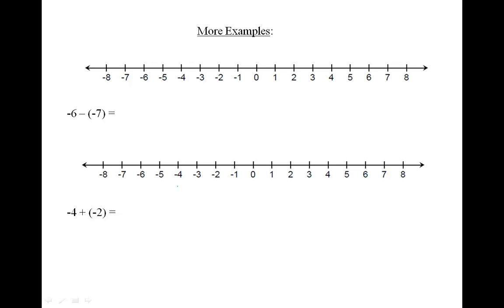Let's look at another example: minus six minus a minus seven. The rule is when you are adding or subtracting numbers, two negatives in the middle of an equation make a positive. So minus six minus a minus seven can be written as minus six plus seven.